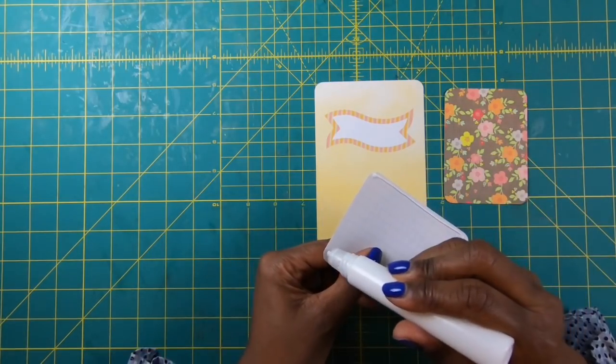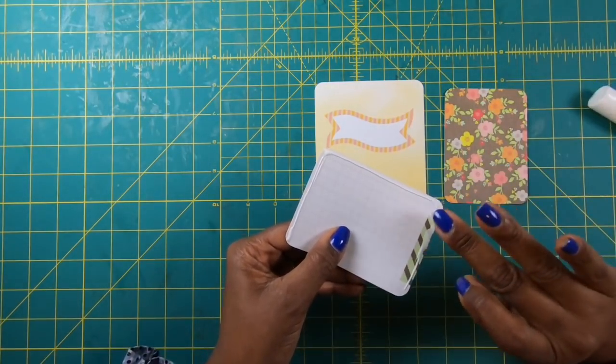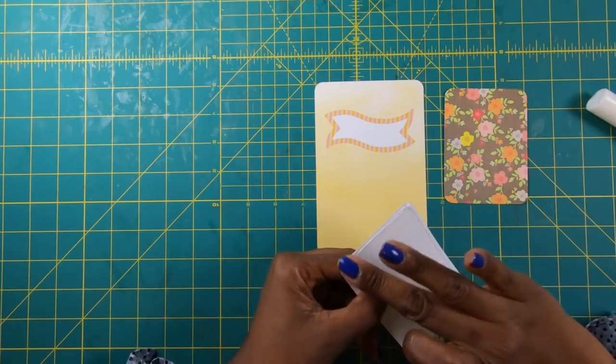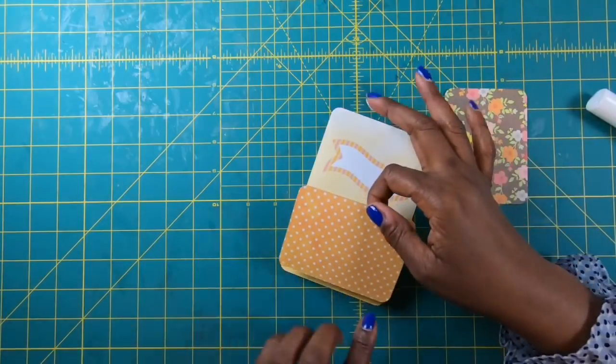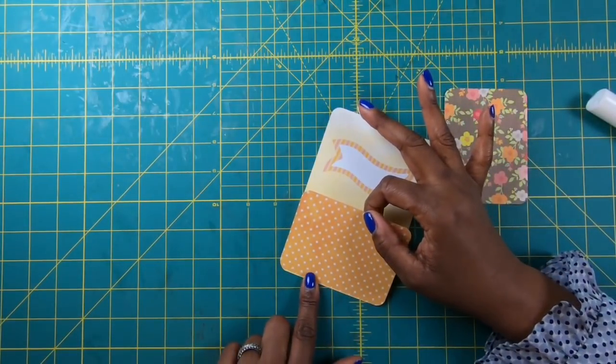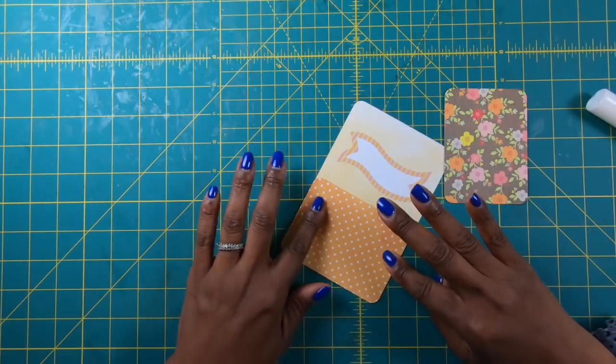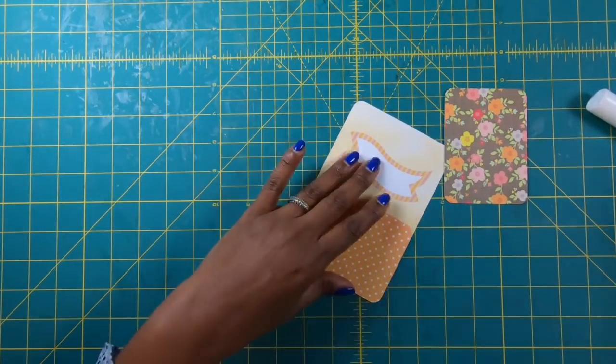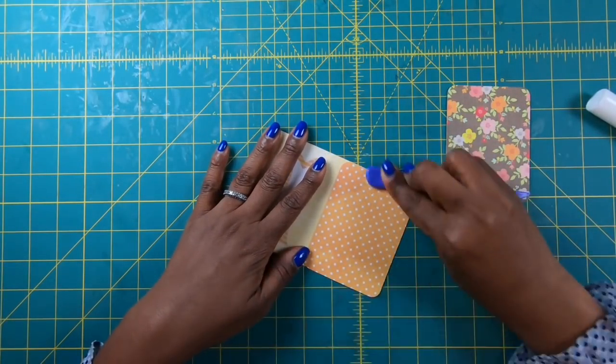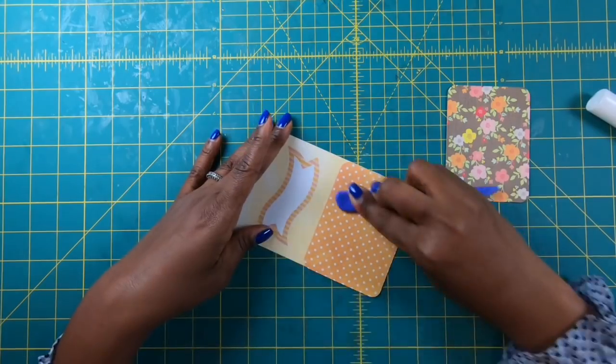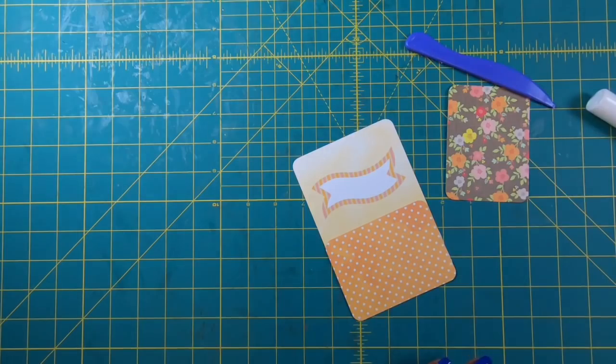For those of you who are not subscribers to my channel, go ahead and subscribe because you're not going to be disappointed. I'm going to smooth this out just a little bit because I don't want it to bubble. Then I'm going to take this and just place it down here in the corner, just matching up the rounded ends. I'll come back with my bone folder and just get this nice and flat.